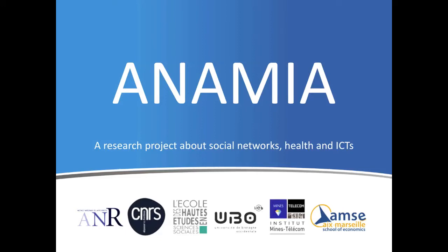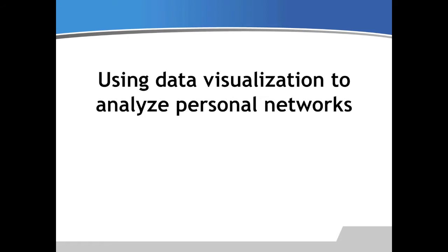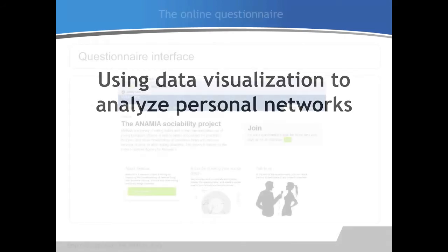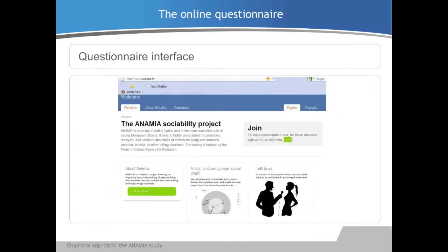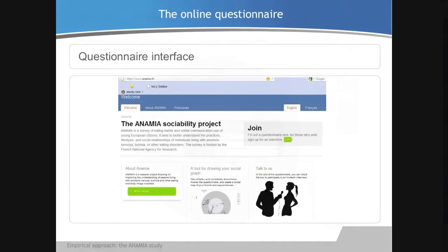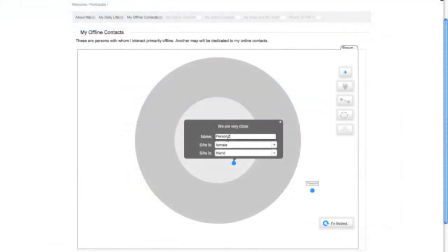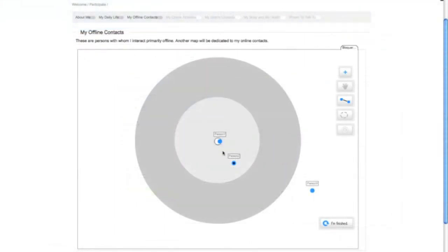Welcome to the Anamia project. Today we are going to learn how to use data visualization to analyze personal network data. For our study, several hundred respondents were invited to take an online survey. An important part of this survey was represented by an ego-centered sociogram.